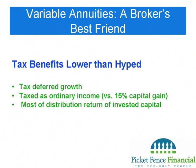Annuity salespeople always tout tax advantages, but I'm going to show you that's actually not an advantage at all. It's true that gains within a variable annuity are not taxed until you pull the money out. But when you do pull those gains out, they're taxed as ordinary income. Whereas if you invested in a regular taxable account, sold at a gain, you'd only be taxed at the capital gains rate — currently 15% if held more than a year.